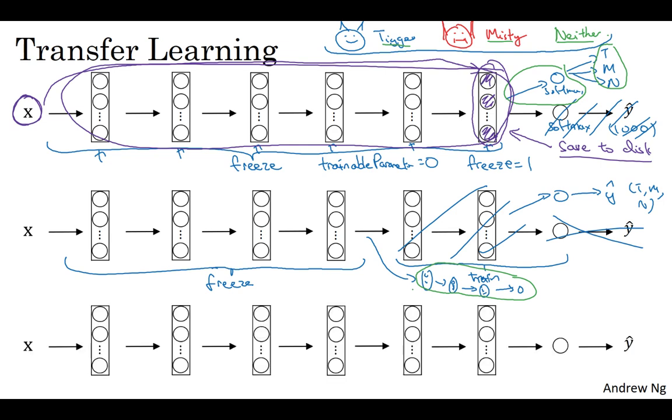And then finally, if you have a lot of data, one thing you might do is take this open source network and weights and use the whole thing just as initialization and train the whole network. Although again, if this was a thousand node softmax and you have just three outputs, you need your own softmax output to output the labels you care about.